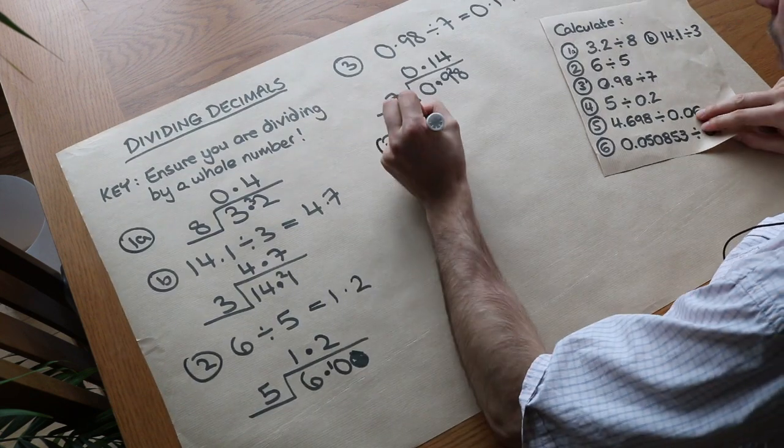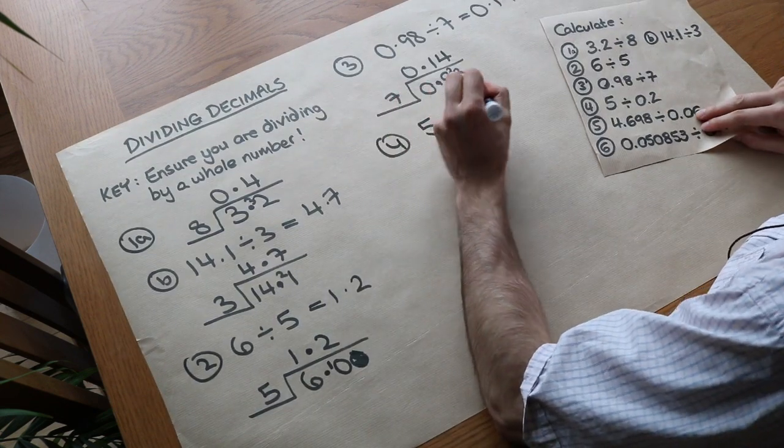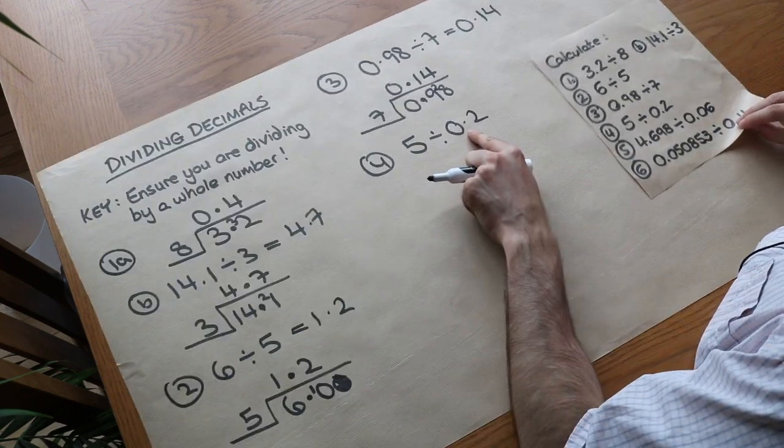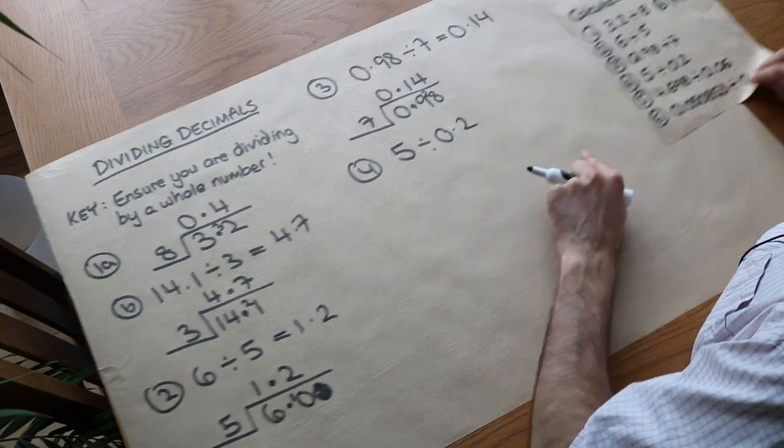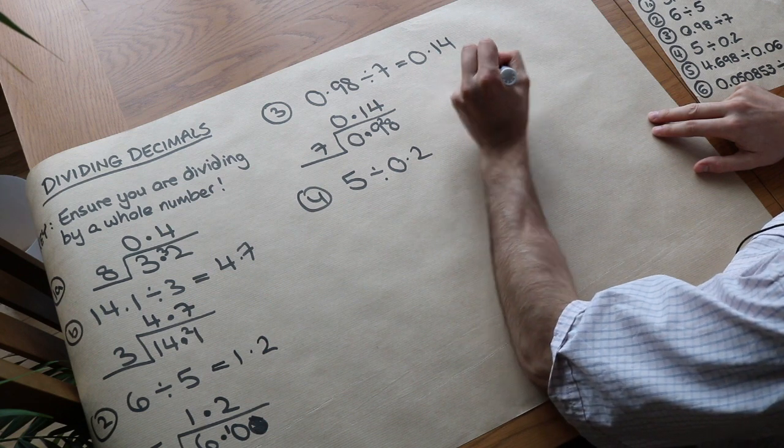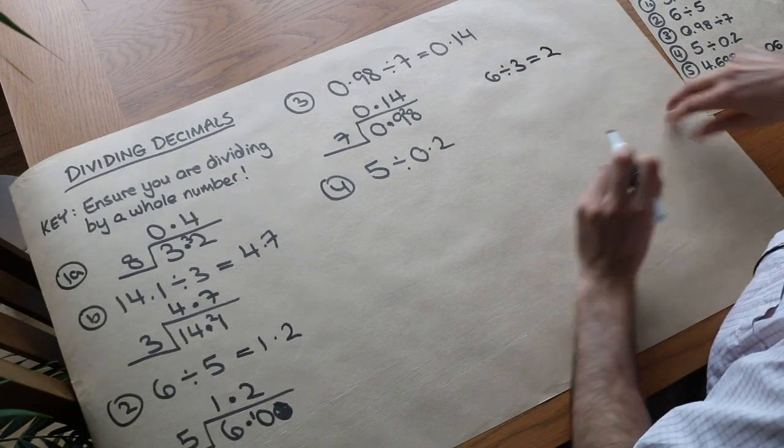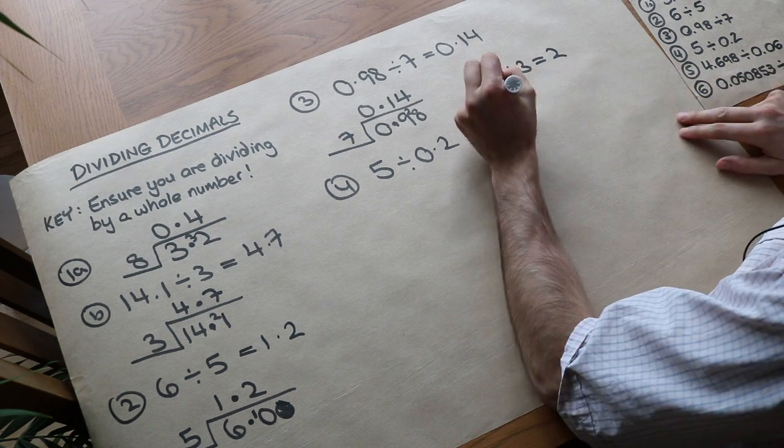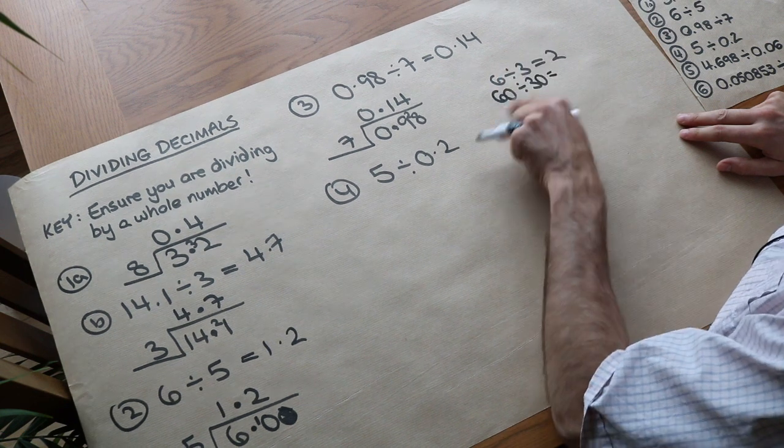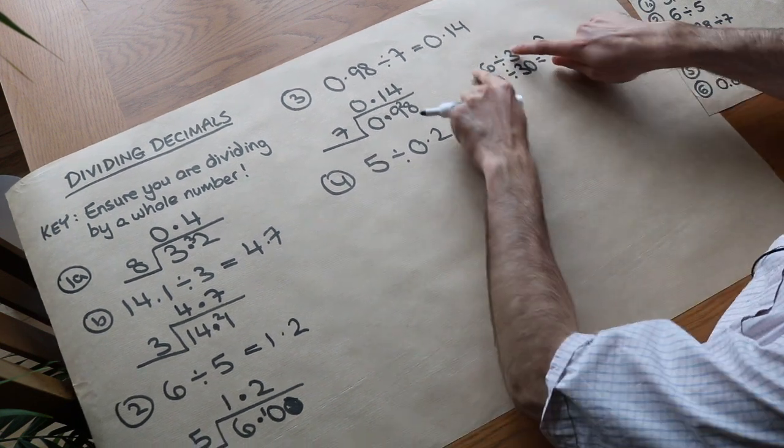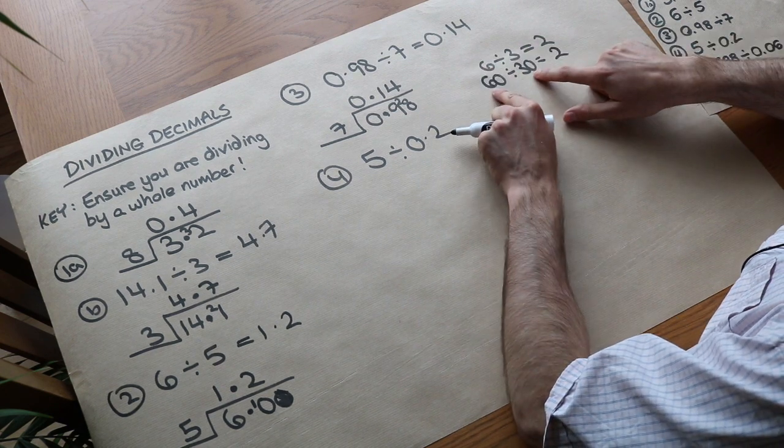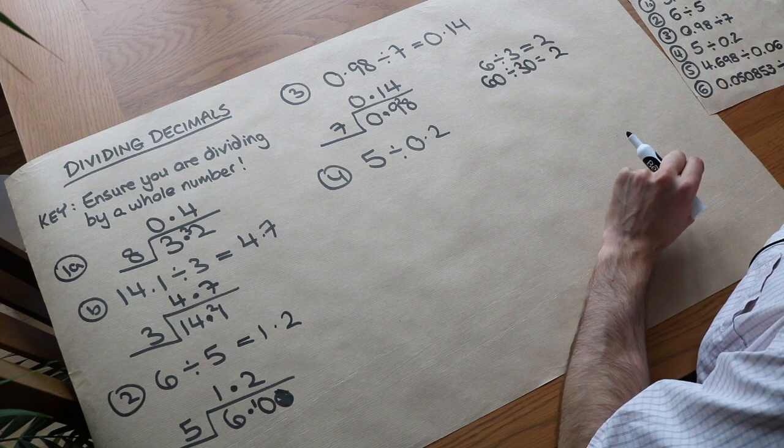Next one, number 4. 5 divided by 0.2. Oh, now this breaks the rule. We want to ensure we're dividing by a whole number, but this is no longer a whole number that we're dividing by. Now the way we deal with this, well imagine you had say like 6 divided by 3. Well we know that's 2. Now let's just say that we multiply both these numbers by 10. We would have 60 divided by 30. Now what's 60 divided by 30? Well it's still 2. So you can see if you multiply both those numbers by 10 or by 100, etc., as long as you multiply them by the same number, you get the same result.